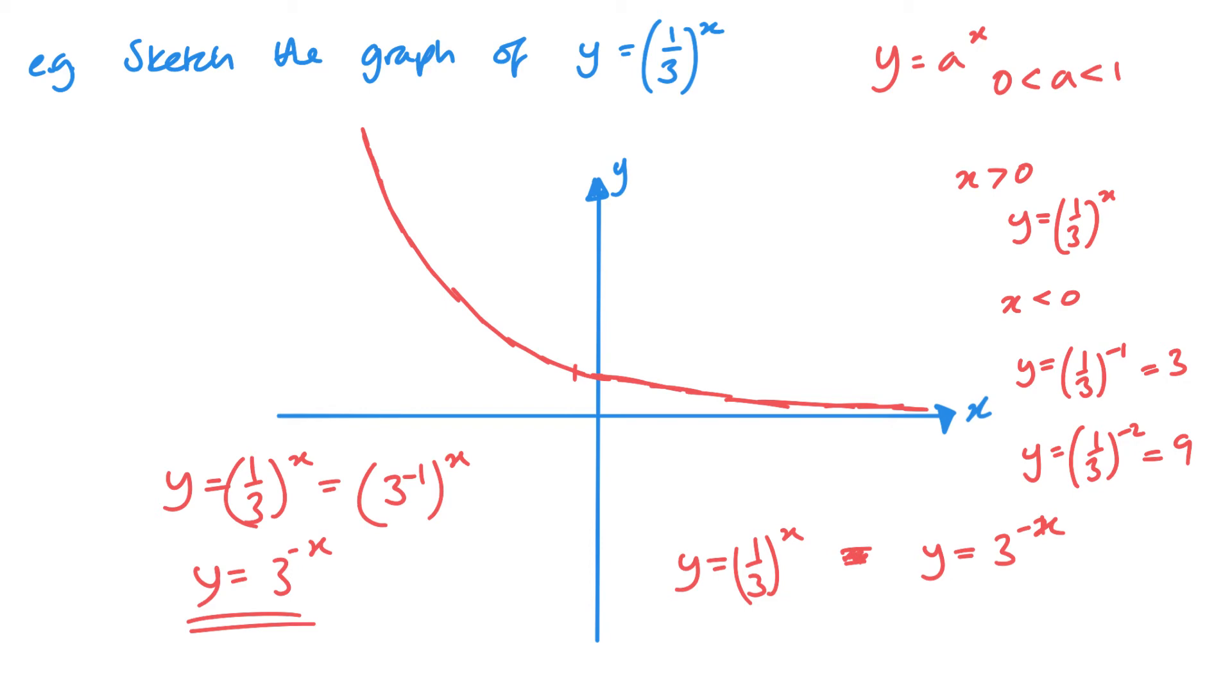If you think of your translations and transformations you've done previously, this would be essentially like a stretch of negative 1, which is why you end up with a reflection. We would have a perfect reflection of 3 to the power x here. This is another important thing: when we're looking at between 0 and 1 for that base value, when it's that fraction, it is going to look like a reflection of essentially the inverse of that.